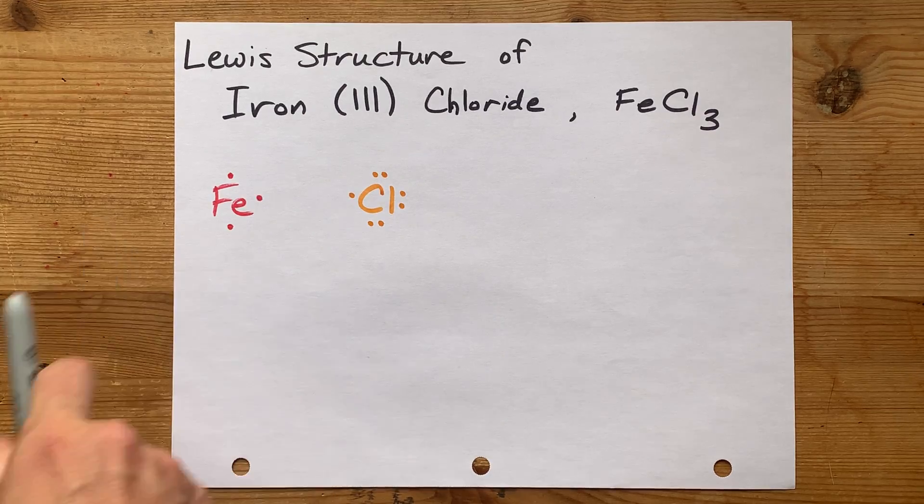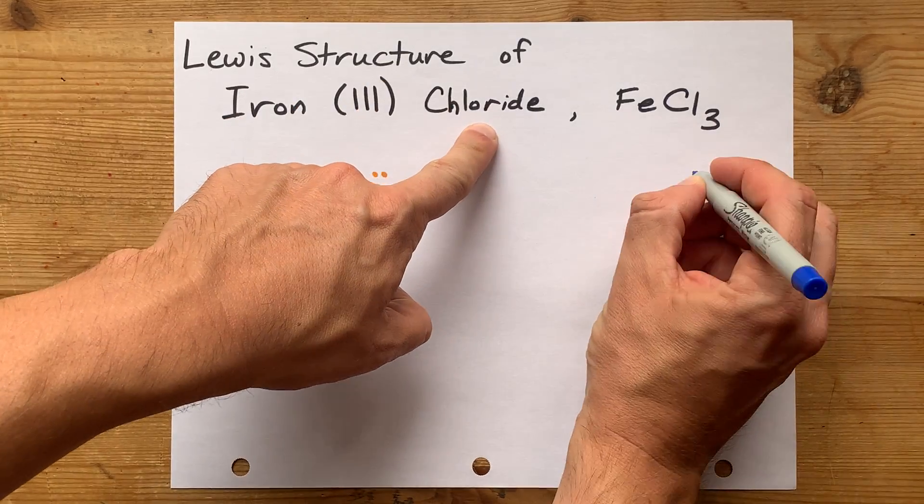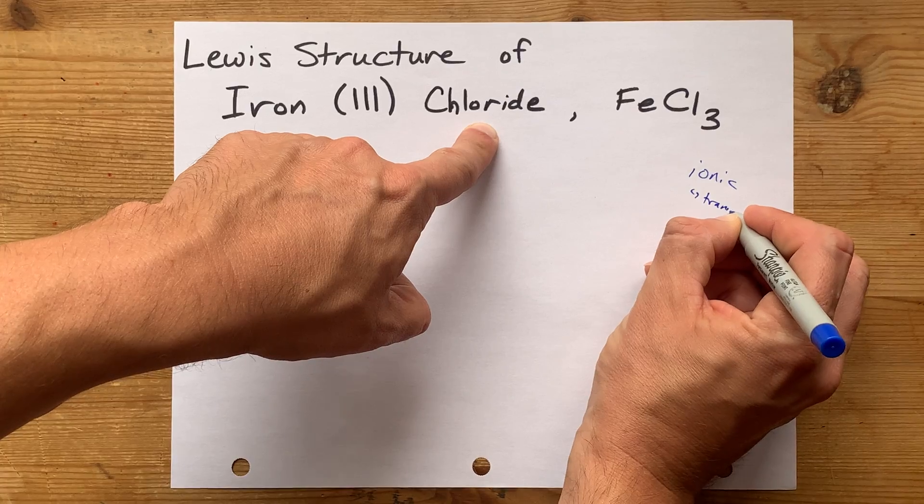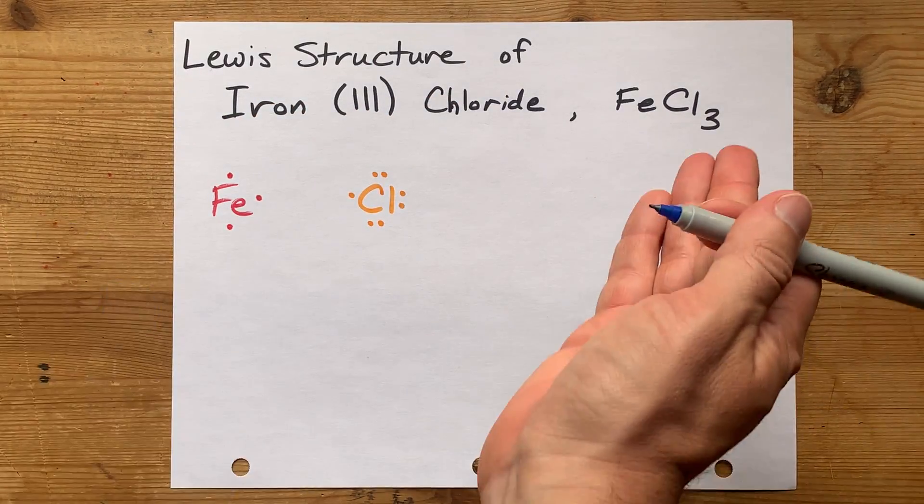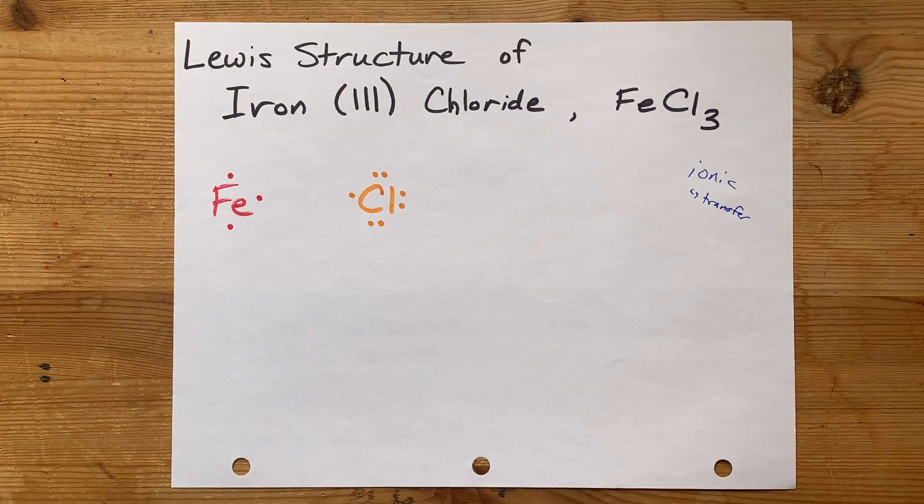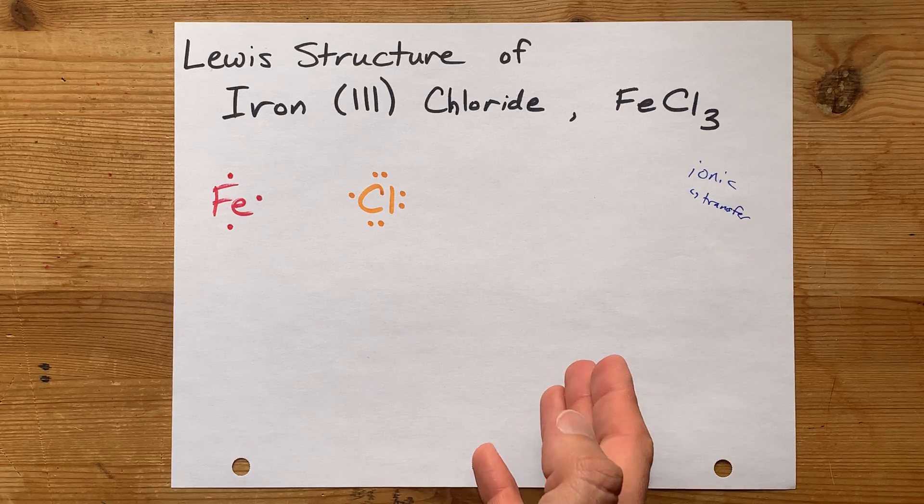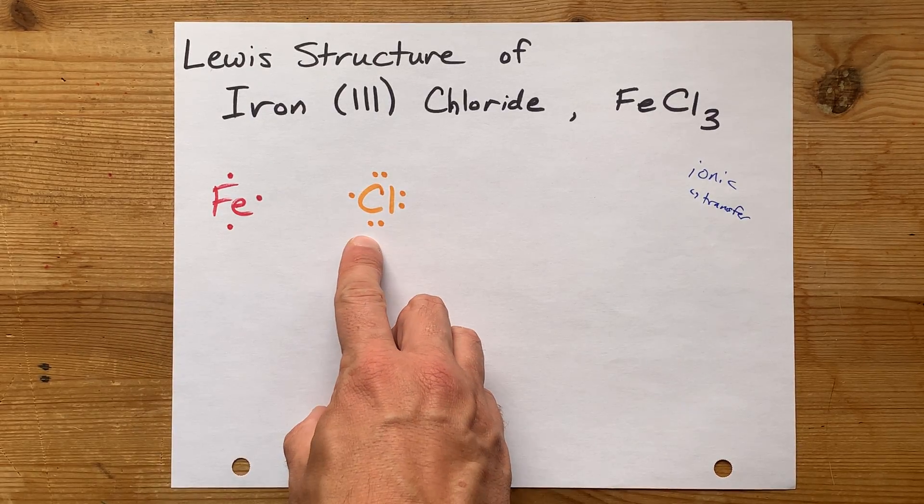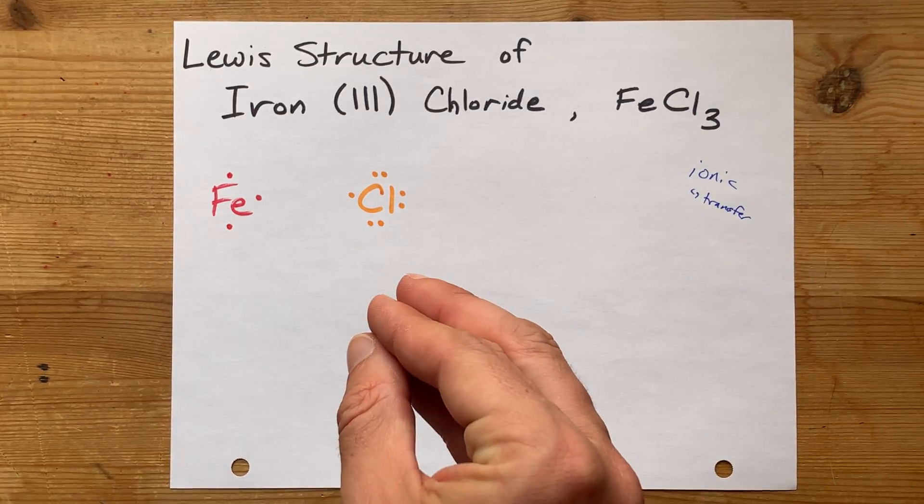As an ionic compound, and I know that because this is a metal reacting with a non-metal, there's going to be a transfer of electrons from metal to non-metal. That's how ionic compounds form. Iron is going to want to lose all of its valence electrons, and chlorine will want a complete octet of 8 outer electrons.